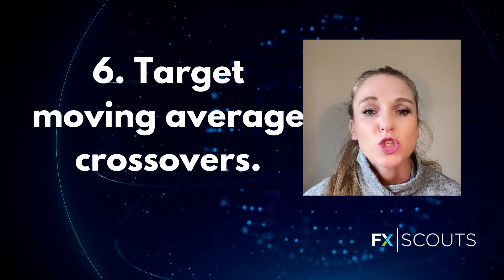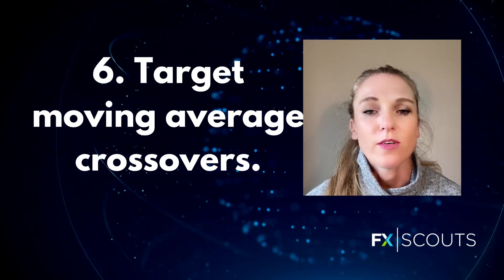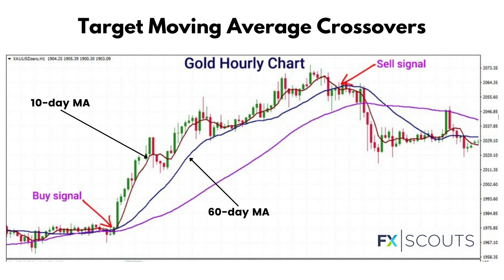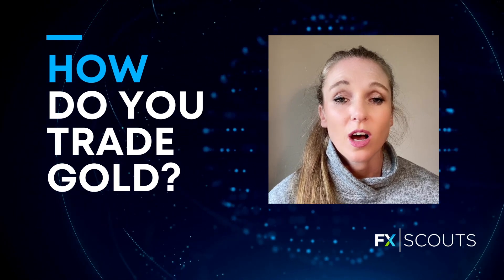Lastly, target moving average crossovers. Because gold prices move within a range, moving averages tend to cross over on forex charts and can signal good buying and selling opportunities. For example, if the 10-day moving average were to cross the price point for the 60-day moving average, it would signal a buying opportunity for long-term traders. Conversely, if a short-term moving average dips below a longer-term moving average, traders would use that signal to sell in anticipation of continued losses. Overall, forex traders should see gold as a safe haven investment and create trading strategies to profit from its potential price movements.